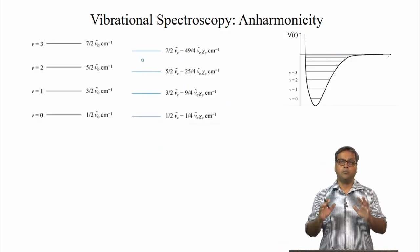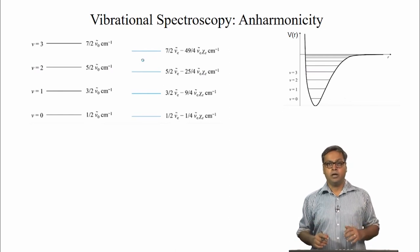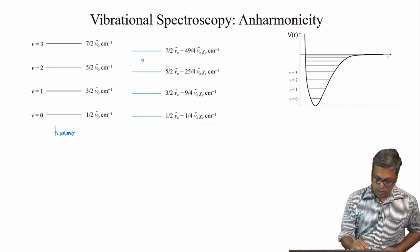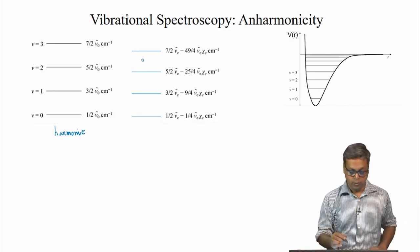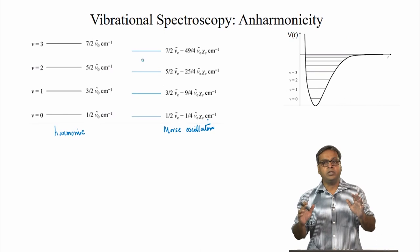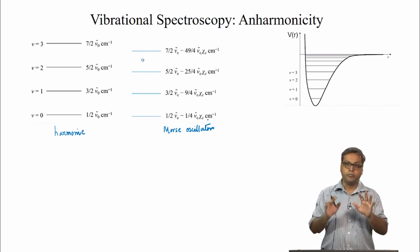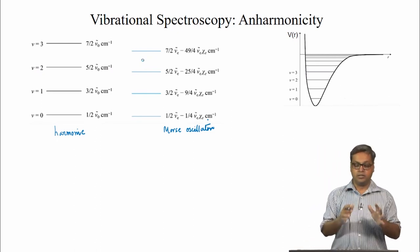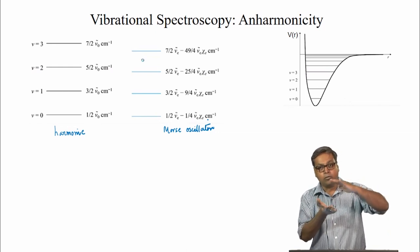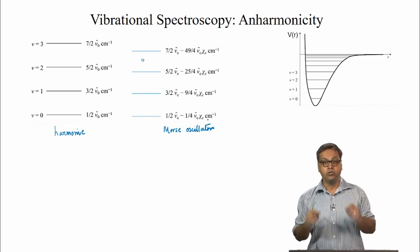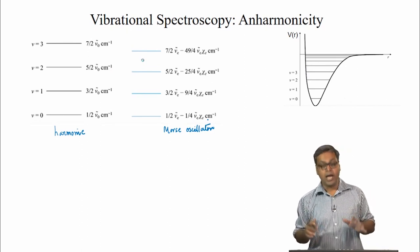The energy expression taking into account anharmonicity is given by nu-bar_v = (v + 1/2) nu-bar_e minus (v + 1/2) squared times nu-bar_e chi_e. This is a perturbation to the harmonic solution. Let us compare the harmonic and the anharmonic solutions. On the left we have the harmonic solution and on the right we have the anharmonic solution from the Morse oscillator. The anharmonicity constant is a positive number, so we are subtracting a positive quantity from the harmonic energies.